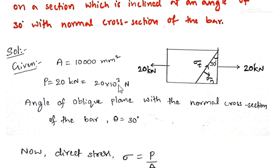Let's take the given data. Cross-sectional area of this member is given as 10,000 mm square and load value is given, we are taking P equals 20 kN or 20,000 newtons. The angle of this oblique plane with the normal cross section is given. Let us take theta and its value is given as 30 degrees.